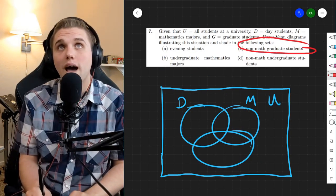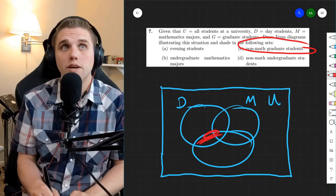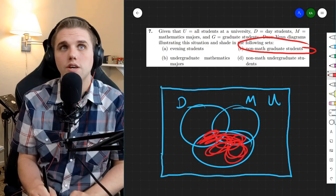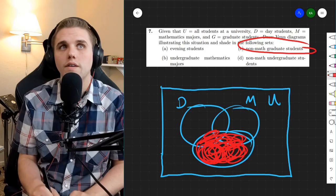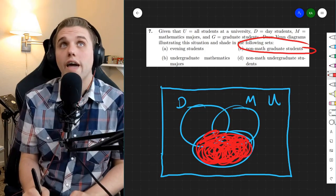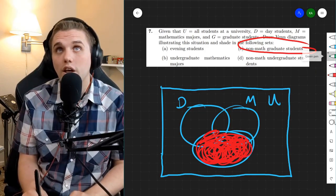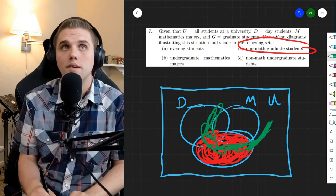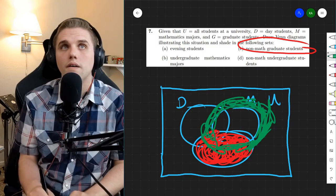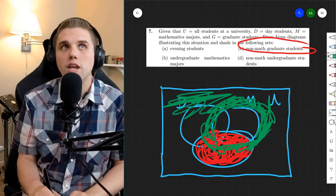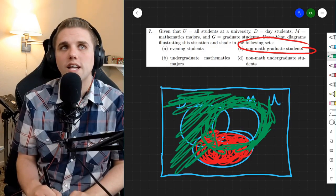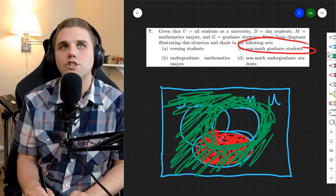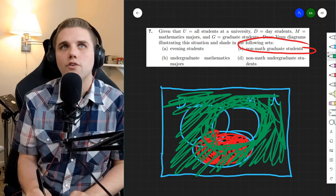Let's keep going. Next up, we have non-math graduate students. So because we're working with graduate students, we're going to be in this region right here, and we need non-math students. And so that's everyone outside of M, but we need the elements that satisfy both the red region and the green region here,